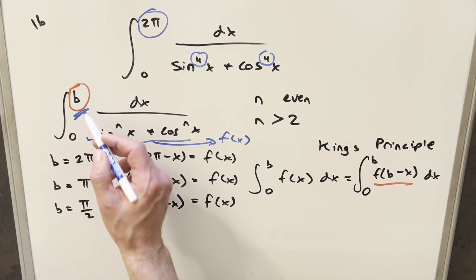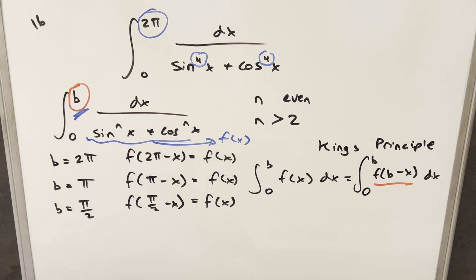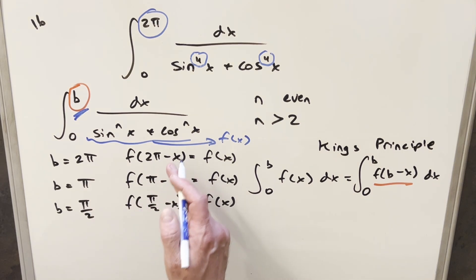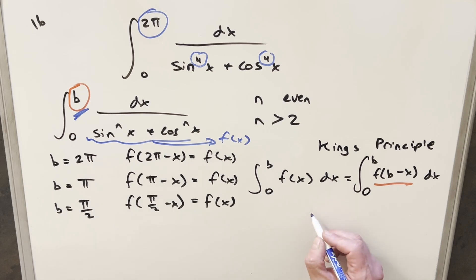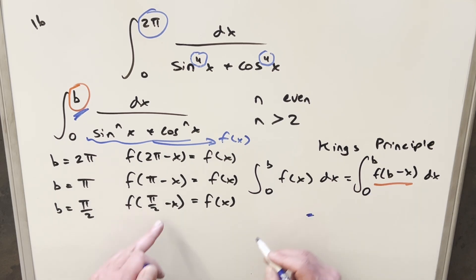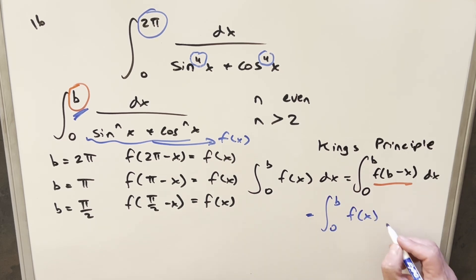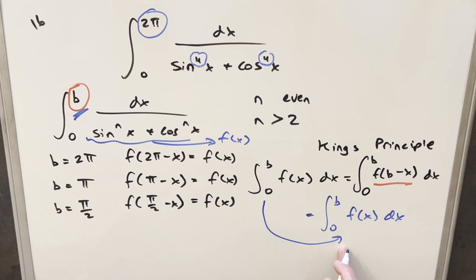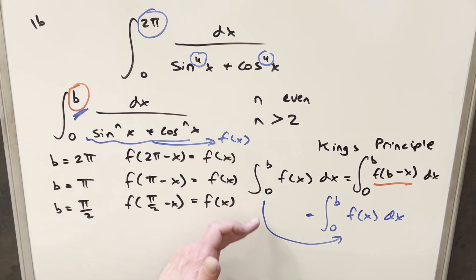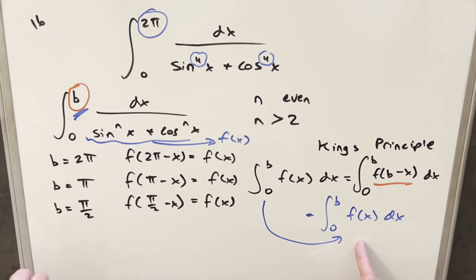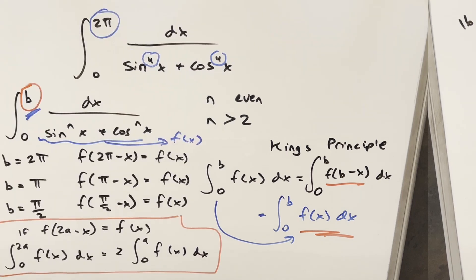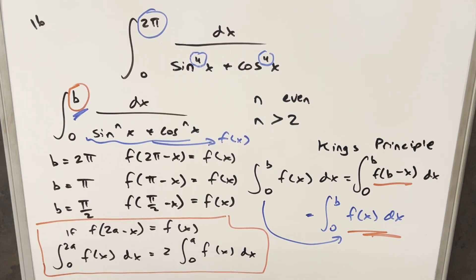Now I'm not claiming this works for every b value — I've just checked three common ones. But the useful thing is we have three values where f(b − x) = f(x). This is an example of King's Principle, but applying it gives back the same integral — a disappointing scenario. If we use it when b = 2π we just get back the same integral. But when we encounter this case, we have another option.